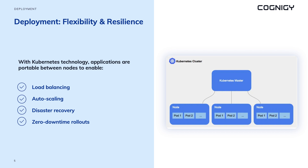Zero-downtime rollouts are made possible on Kubernetes. As new versions of an application are deployed, they can be gradually rolled out, ensuring that the application is still available and functional during the deployment process.